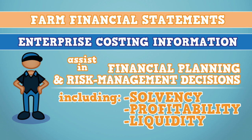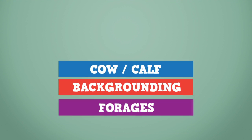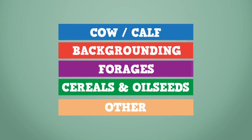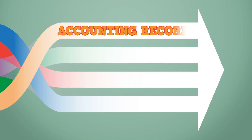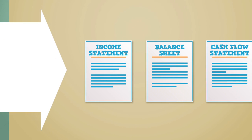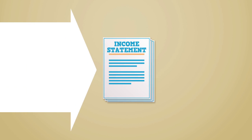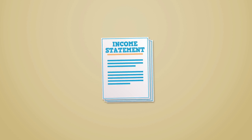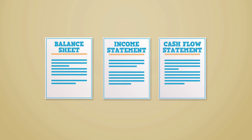Before financial analysis can occur, it is important to understand how these statements fit together. The basic building blocks of farm financial statements are formed by tallying farm enterprises collectively. This information combines accounting records with production, sales, and inventory records. The three cornerstone financial statements and the starting point for evaluating financial performance include the income statement, the balance sheet, and the cash flow statement.